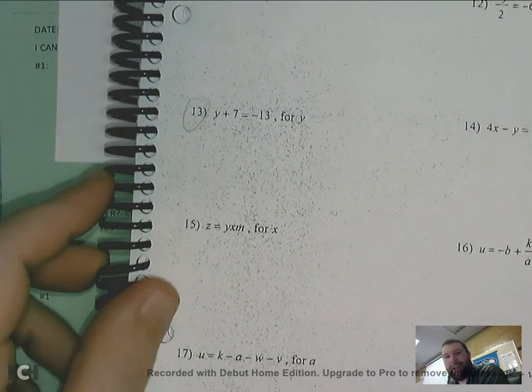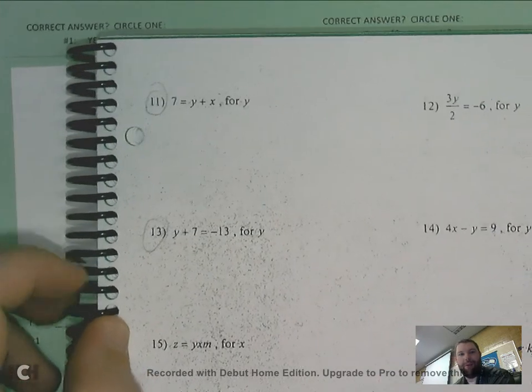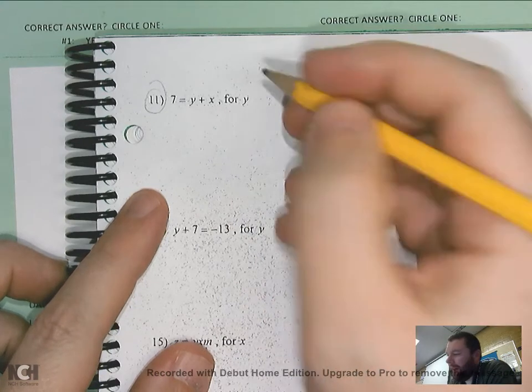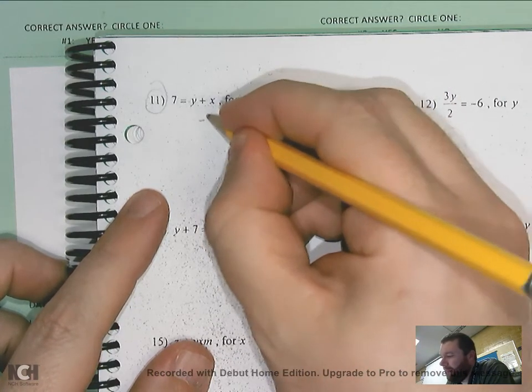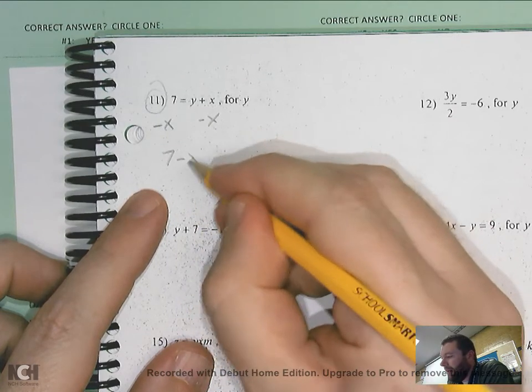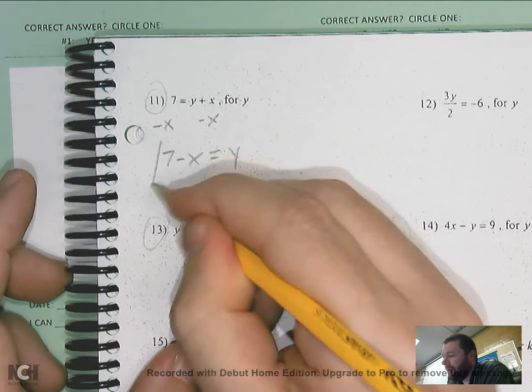I mean, look at this test. Most of it is one step. You guys should do great. So number 11, y plus x. I got to get rid of that x because I'm trying to solve for y. So I'd minus x to each side. And that would give me 7 minus x is equal to y. Y is by itself. I'm done.